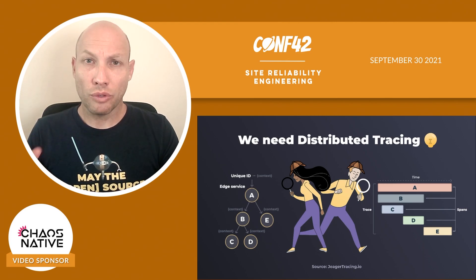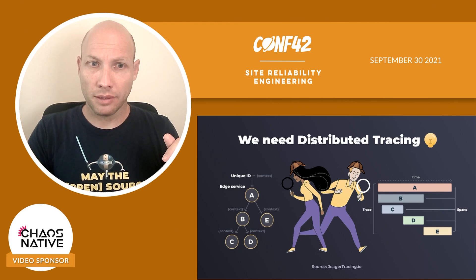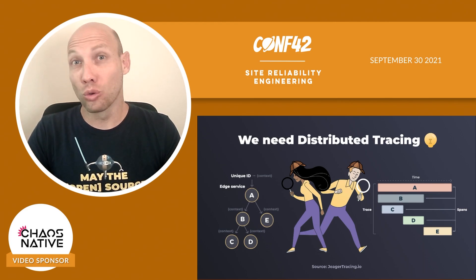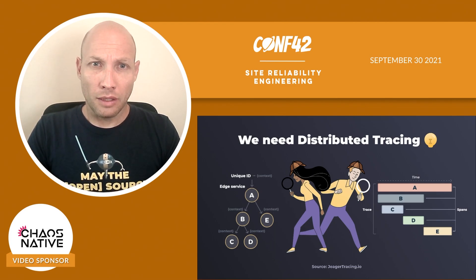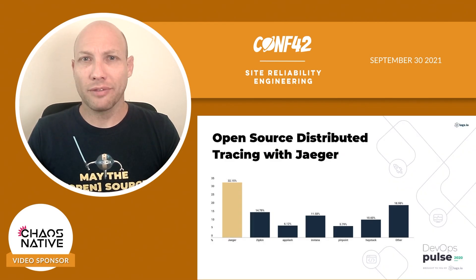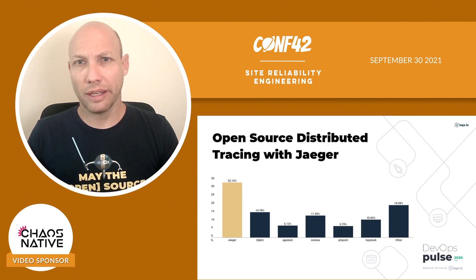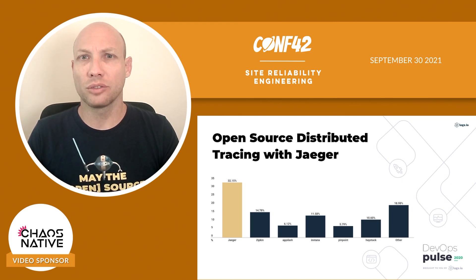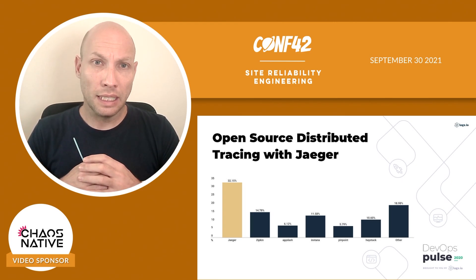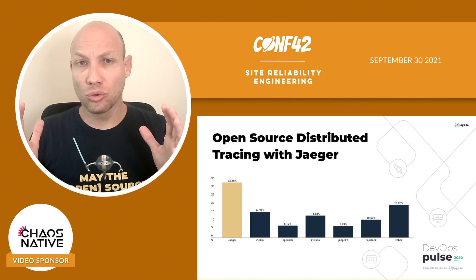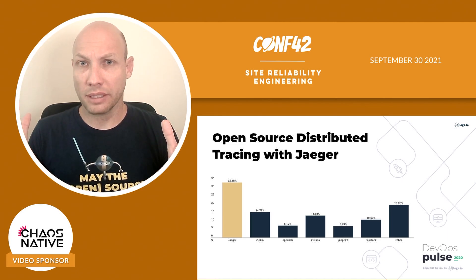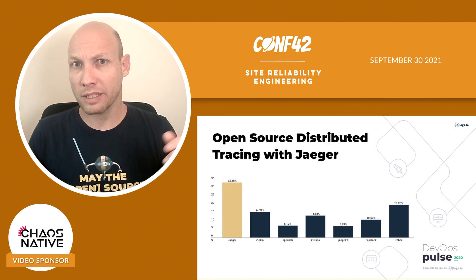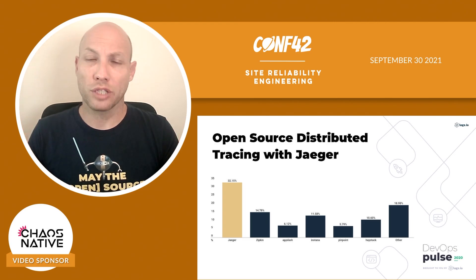We realized we needed distributed tracing. Now the question was which distributed tracing tool to use. We are open source advocates — we use the ELK stack for logging and Prometheus for metrics. So obviously we turned to open source for tracing as well. We looked into Jaeger and Zipkin, the two open source candidates. We started using both of them, but ultimately we chose Jaeger.